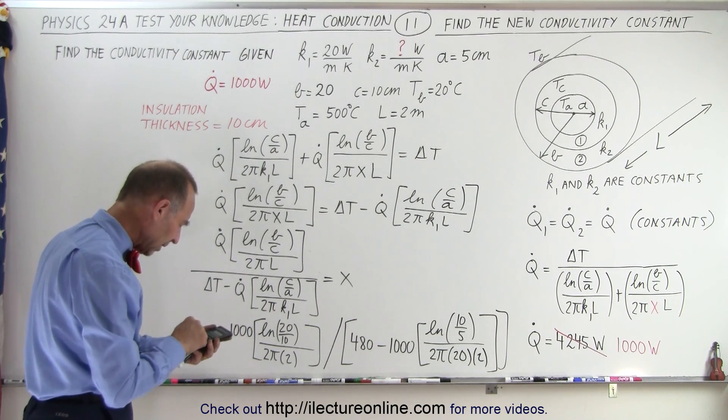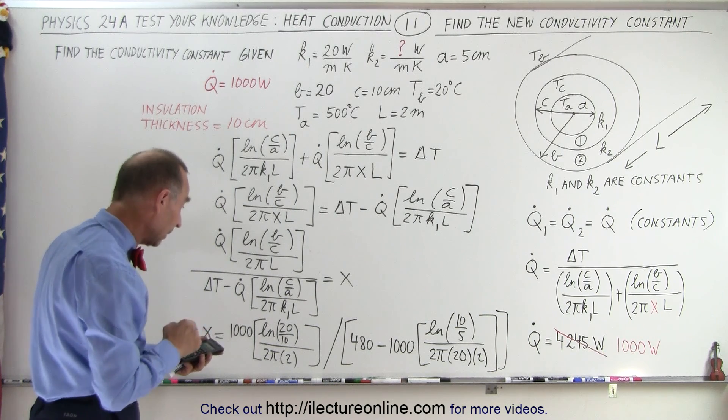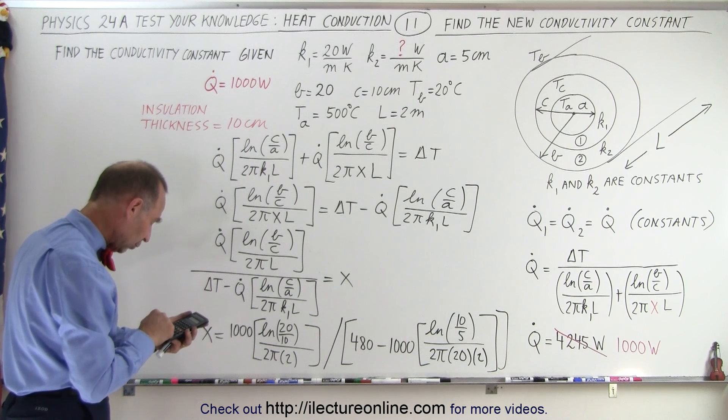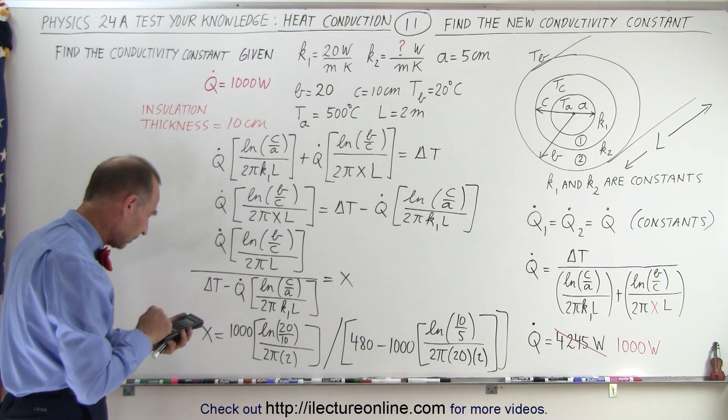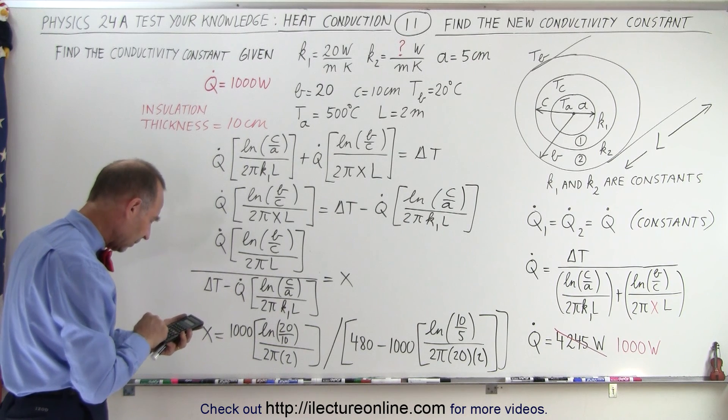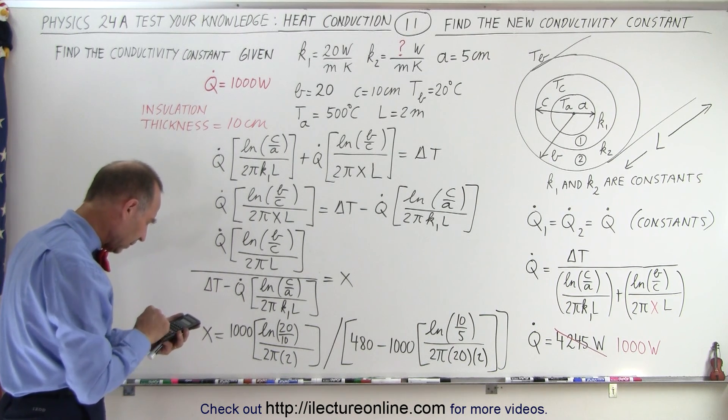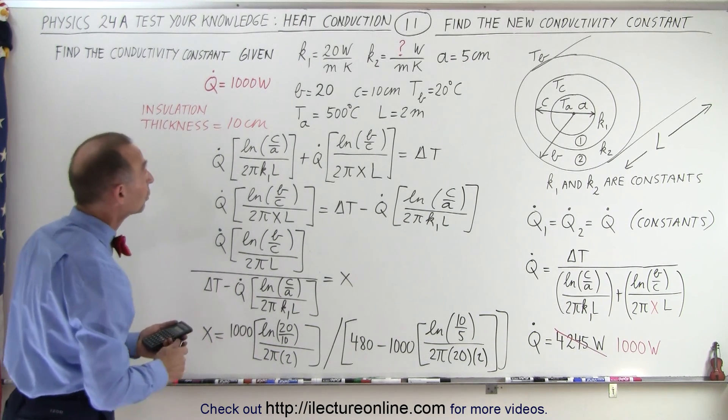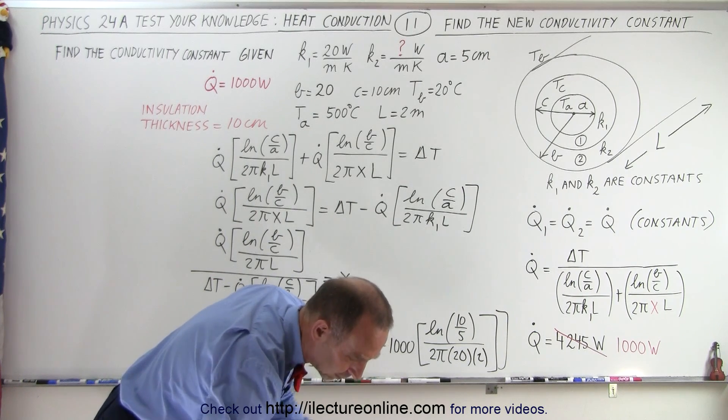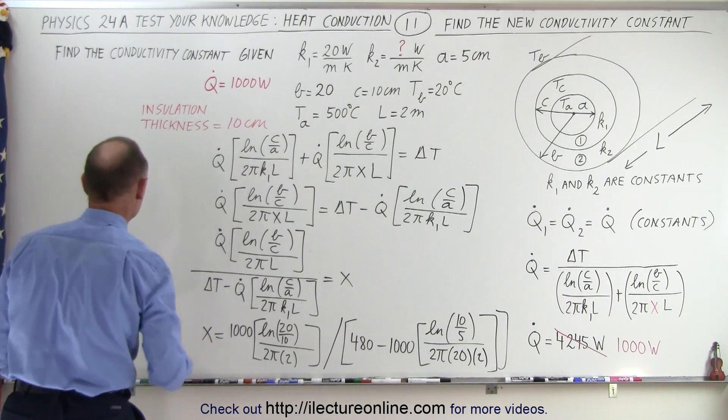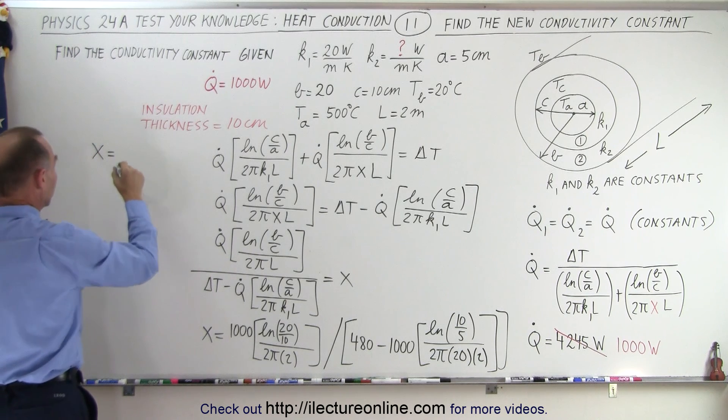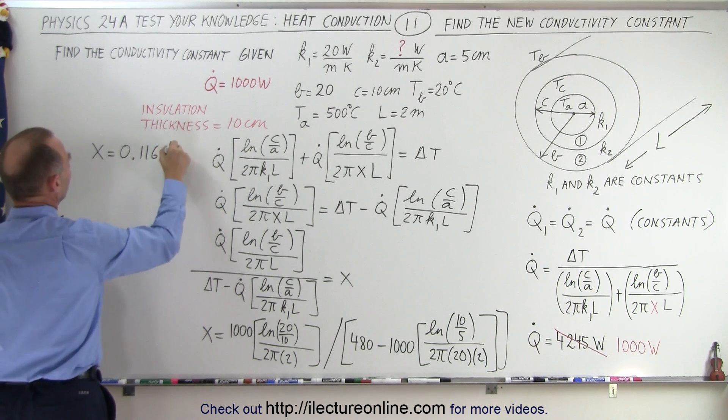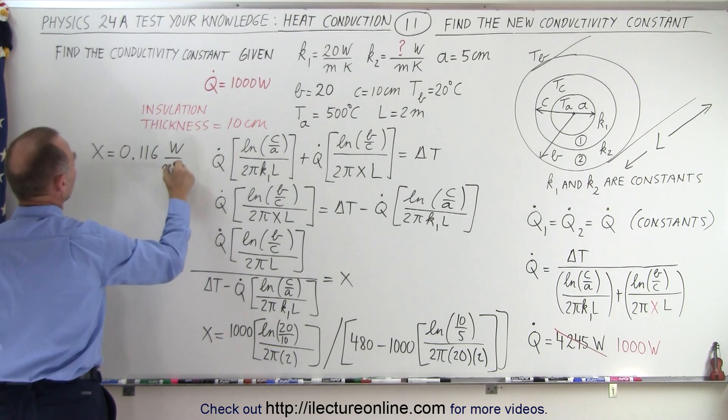So we bring the numerator by 1 over X. Then we multiply times 2, take the natural log, times 1,000, divide by 4, divide by pi. And I get X is equal to 0.116, that would be watts per meter times Kelvin.